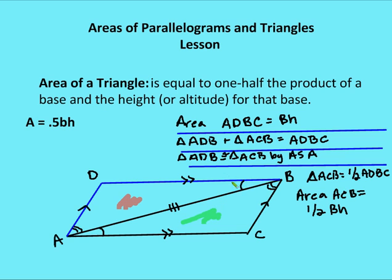I prove that by showing that angle DBA and angle CAB are congruent, because I have two parallel lines cut by a transversal — alternate interior angles are congruent. And angle DAB is congruent to angle CBA for the same reason: alternate interior angles defined by a transversal between two parallel lines AD and CB are congruent. And AB is congruent to itself. So triangle ADB is congruent to triangle ACB. I also know that ADB plus ACB equals parallelogram ADBC. So ACB is half of ADBC, meaning the area of triangle ACB is half the area of the parallelogram, which is one-half base times height. So the area of a triangle is one-half the base times the height.